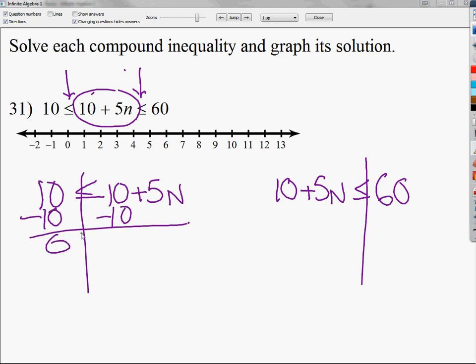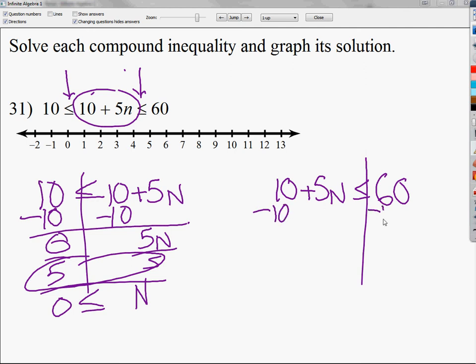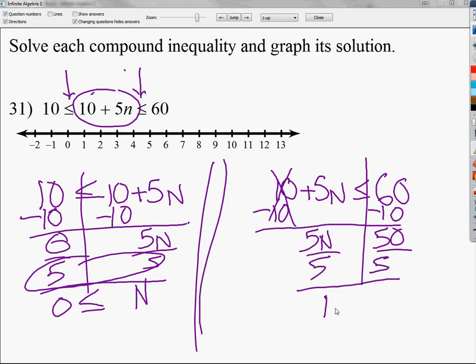10 minus 10 is zero. Bring down 5n here. Divide by 5. Zero. N. Since it's divided by a negative, I do not need to flip it over. So n is greater than zero. That's part of it. Then I need to get rid of 10 on the left side of the second one. Let me put the two lines in between. Mark this out. Bring down 5n. 60 minus 10 is 50. Divide by 5. N. And 50 divided by 5 is, of course, 10. I do not need to flip it over. It's less than 10 greater than zero.